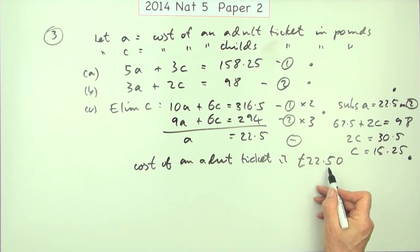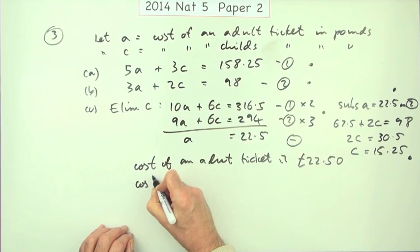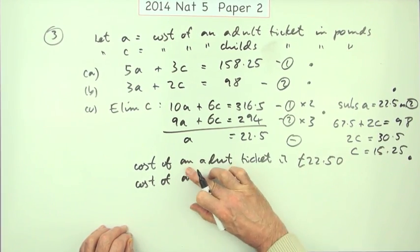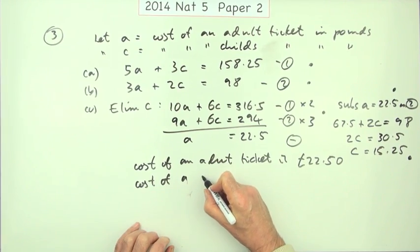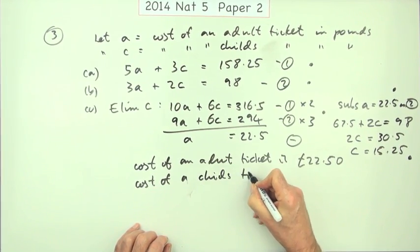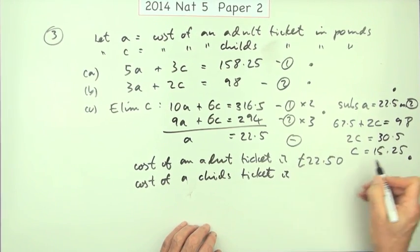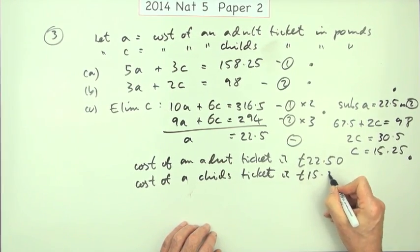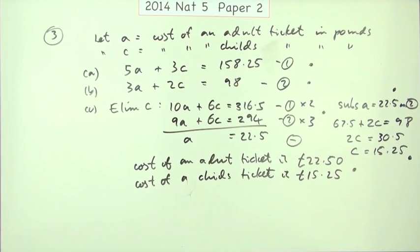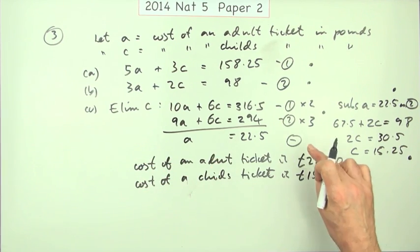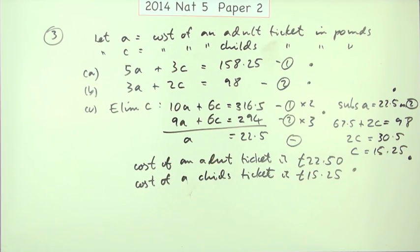Not just 22.5, it has to be a proper amount of money. Even though I could have used ditto—it's an exam—cost of a child's ticket is £15.25. That gets you the final mark for stating that. It had to have all the words in it, had to have adult, had to have child, had to have the pound signs, had to have two decimal places.